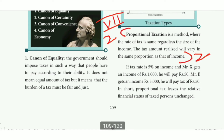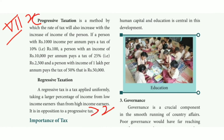Continuing: next page — progressive tax, regressive tax — two headings, first paragraph each. Three types with explanation.